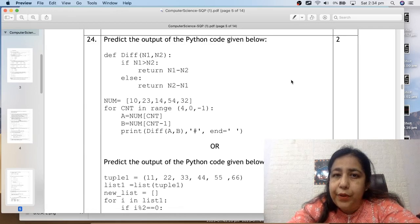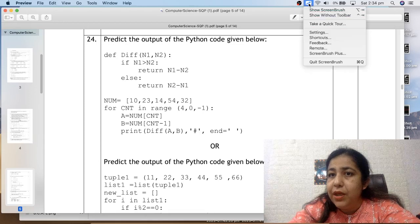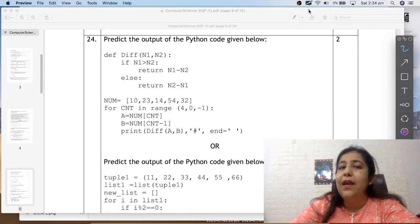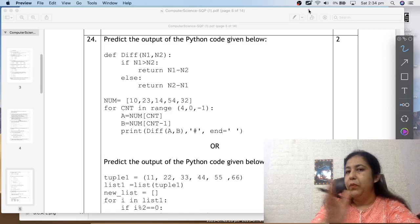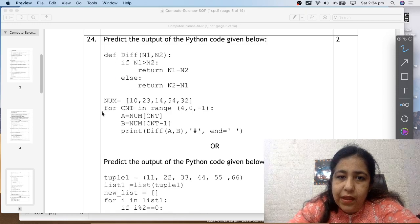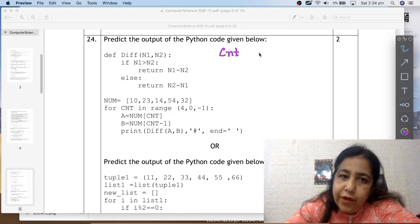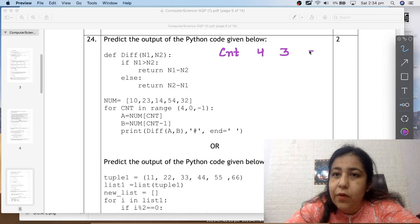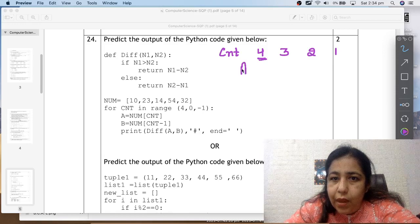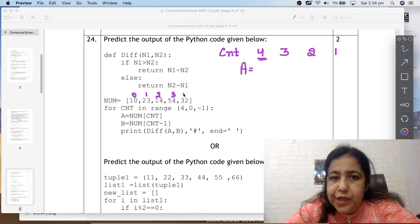Next question. Predict the output of the python code given below. When you have to do these output questions, make sure you show working separately. So you can first write working, show the working, and finally write the output. Or you can divide the page in half, show working on half side and write output here. Now we will start the working. Here we will say that loop will work four times. So cnt will first be four, then three, then two, and then one.